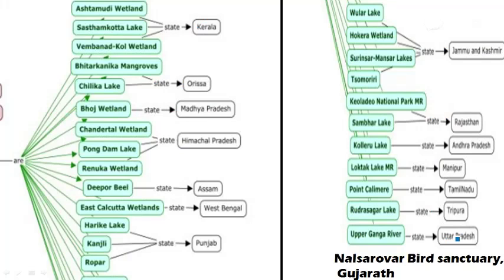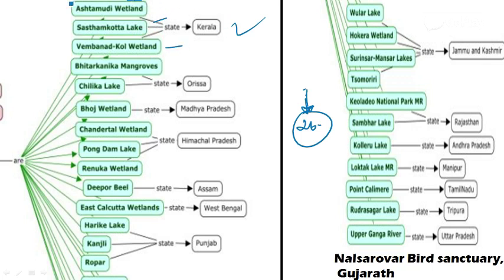Under the Ramsar Convention, an international convention, India has 26 Ramsar sites — 26 wetlands recognized internationally. Three are in Kerala: Ashtamudi Wetland, Sasthamkotta Lake, and Vembanad Kol Wetland. In Odisha there are two: the Bhitarkanika Mangroves and Chilika Lake. Madhya Pradesh has Bhoj Wetland. Himachal Pradesh has three Ramsar sites: Chandertal Wetland, Pong Dam Lake, and Renuka Wetland. Assam has Deepor Beel, and West Bengal has East Calcutta Wetlands.